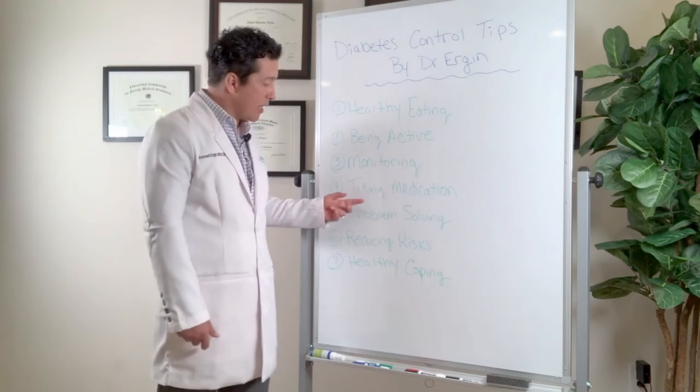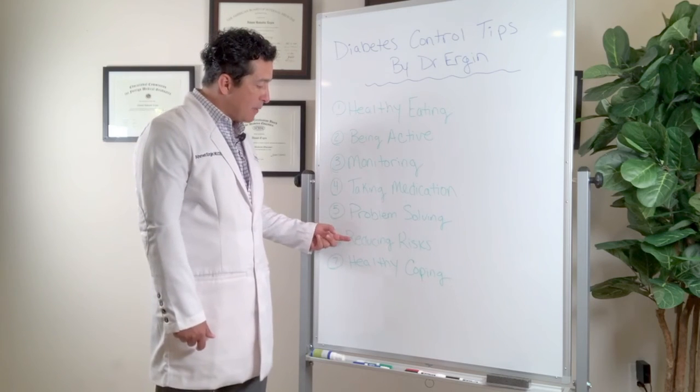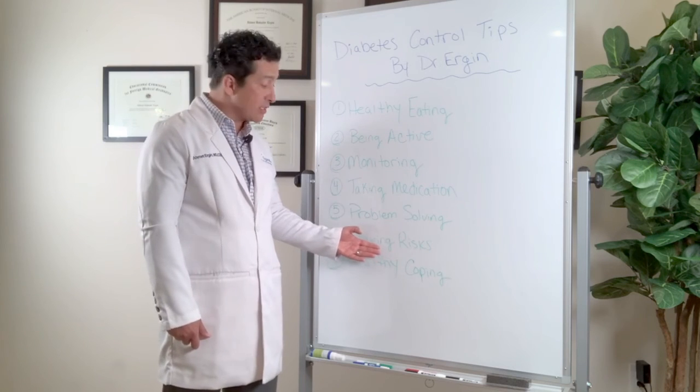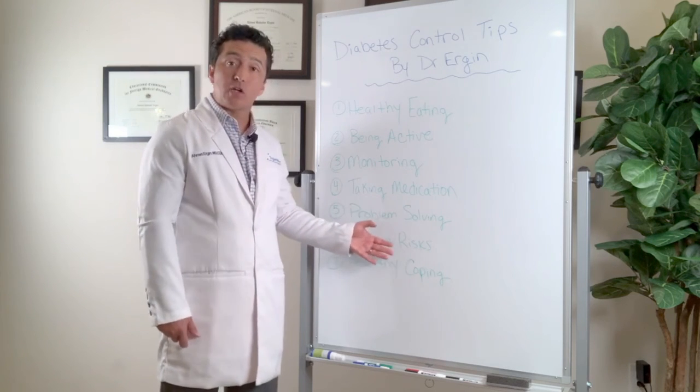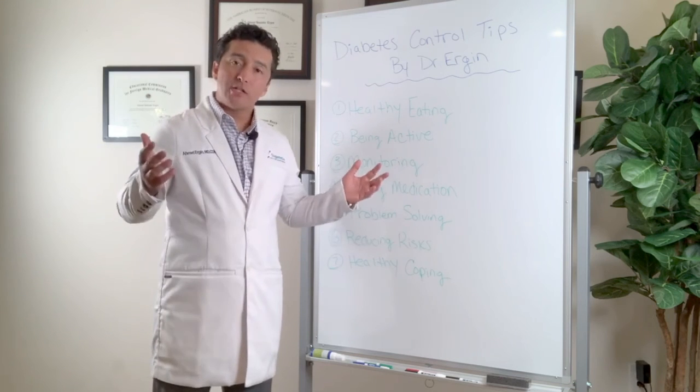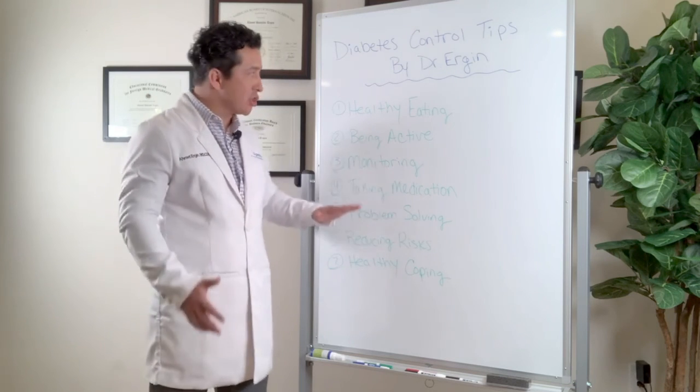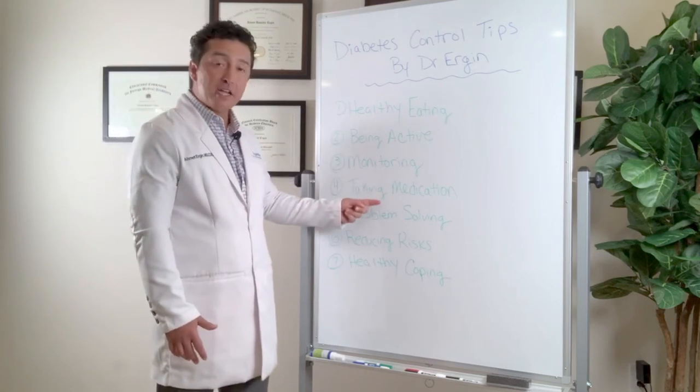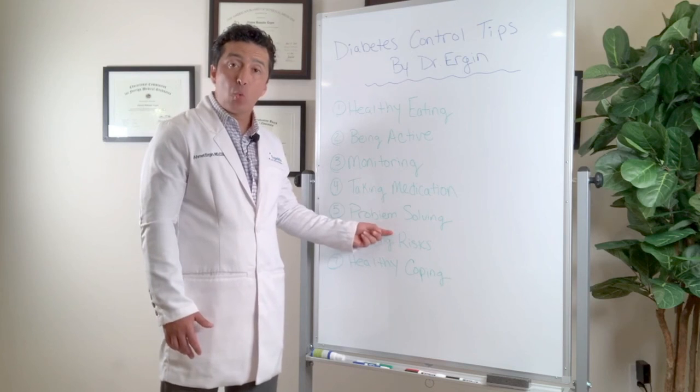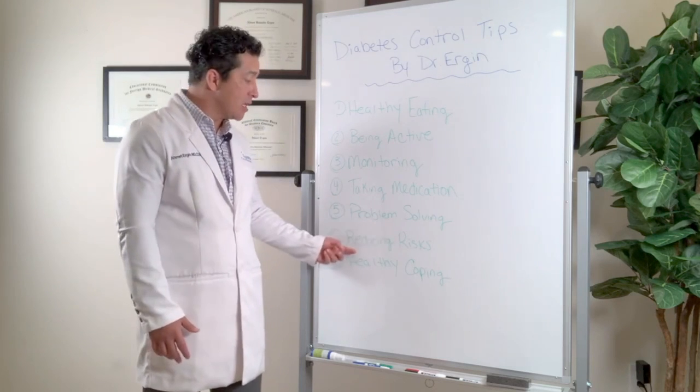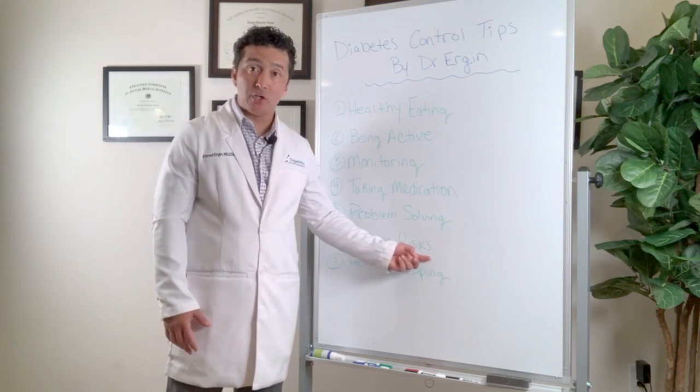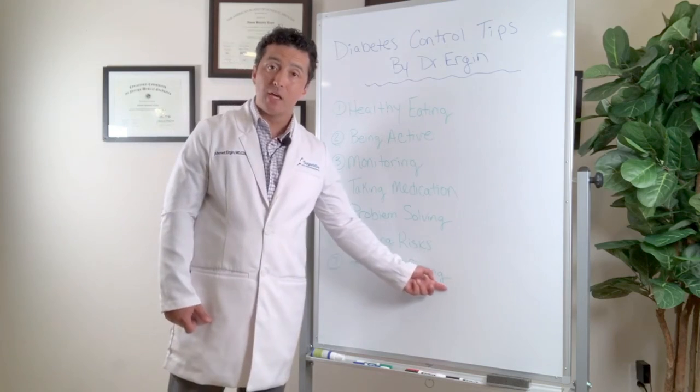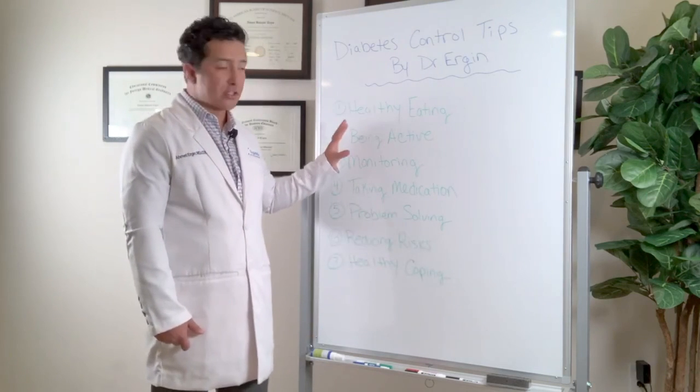And reducing risks, again, if your blood sugars are running high, you're not going to be able to reduce any risk. You're going to go into kidney failure and the kidney failure will complicate everything else. So as a result, guys, please make sure that you follow this: healthy eating, being active, monitoring correctly, taking your medication, problem solving when there's a problem interfering with your routine, reducing risks, making sure that you're also controlling other risks such as blood pressure and cholesterol, and healthy coping with all of these things that you have to follow.